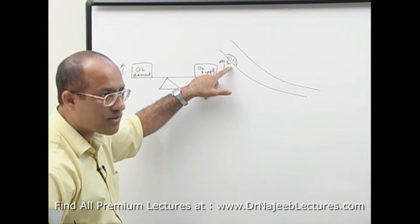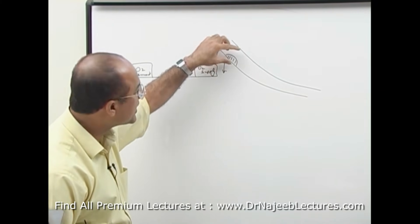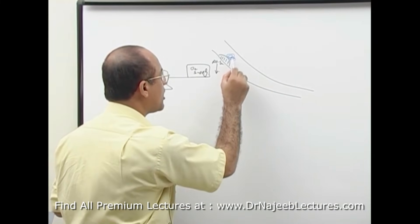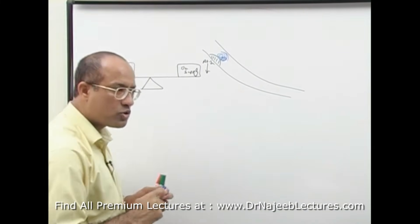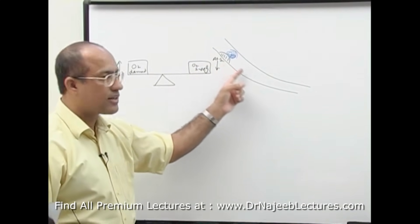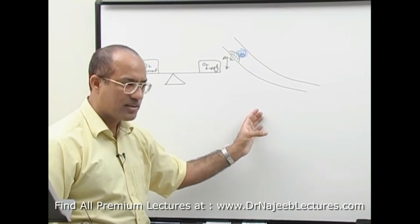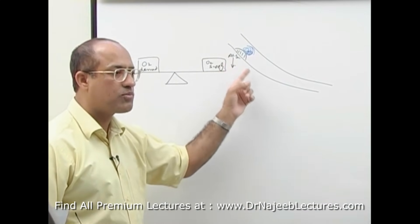So with age, if atheromas are forming in your coronary artery, it may get narrow, or there may be a platelet plug or even a big thrombus. So due to any reason, if blood flow through the coronary artery becomes less, myocardium will become ischemic.